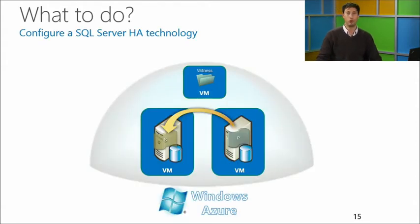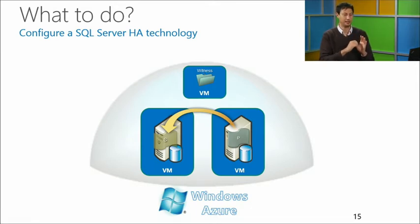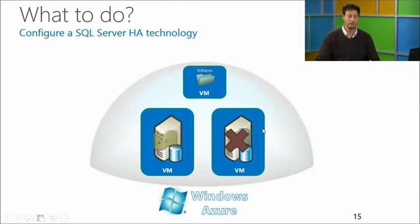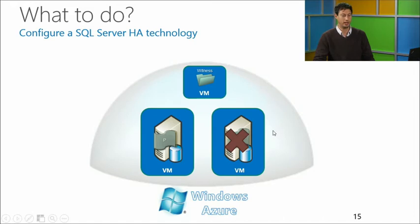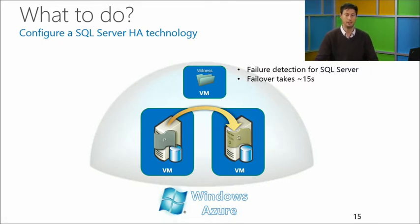The solution is the same as on-premise: configure a high-availability technology for SQL Server in Windows Azure. You can have three virtual machines — primary, secondary, and a witness — the witness orchestrates automatic failover. If the primary goes down, the secondary automatically becomes the new primary and your applications continue running there. At some point the previous primary comes back online as a secondary and starts resynchronizing transactions. This provides failure detection for SQL Server — a continuous out-of-memory situation, for example, will be detected and failover will take around 15 seconds, compared to 15 minutes of service healing.